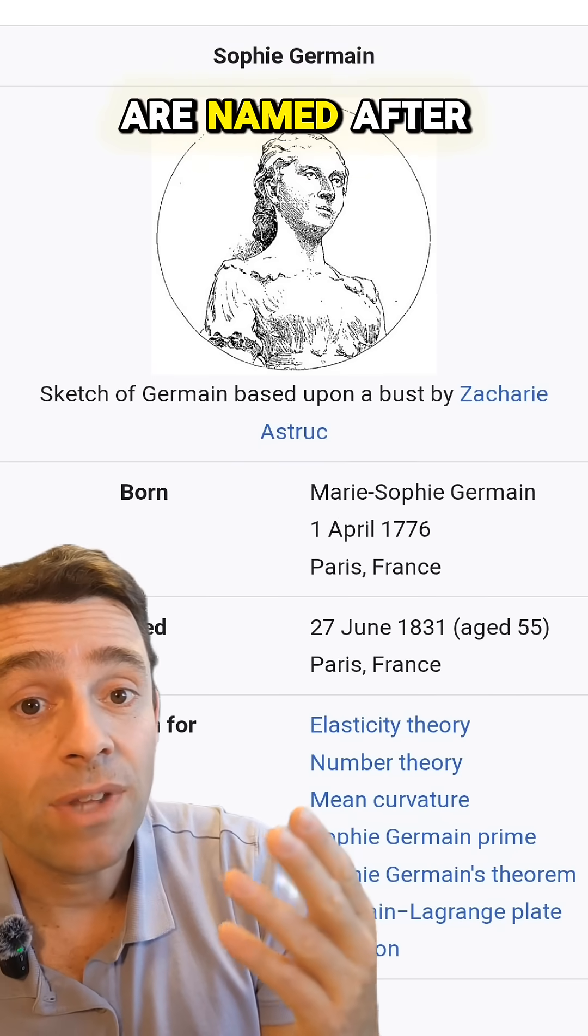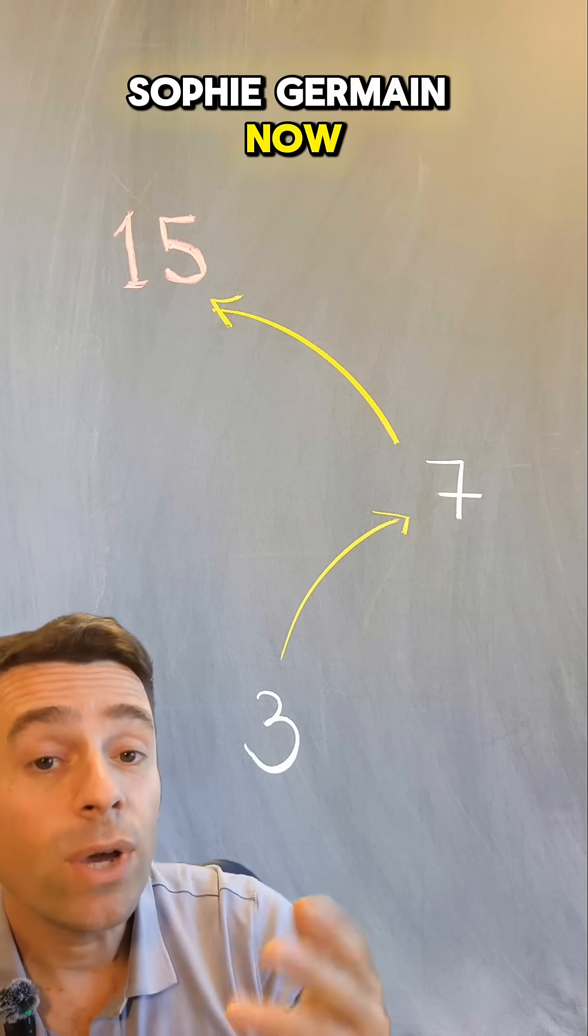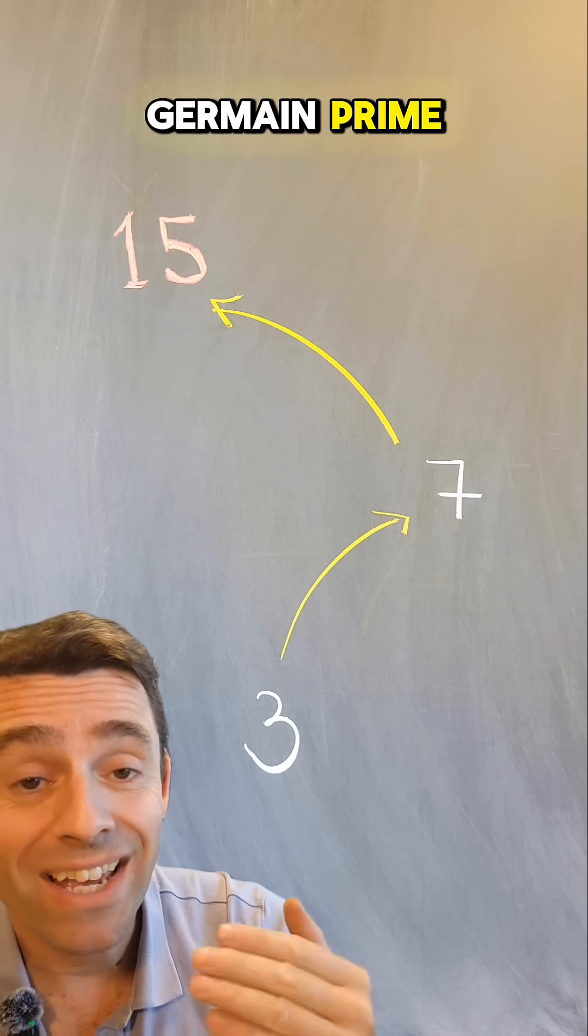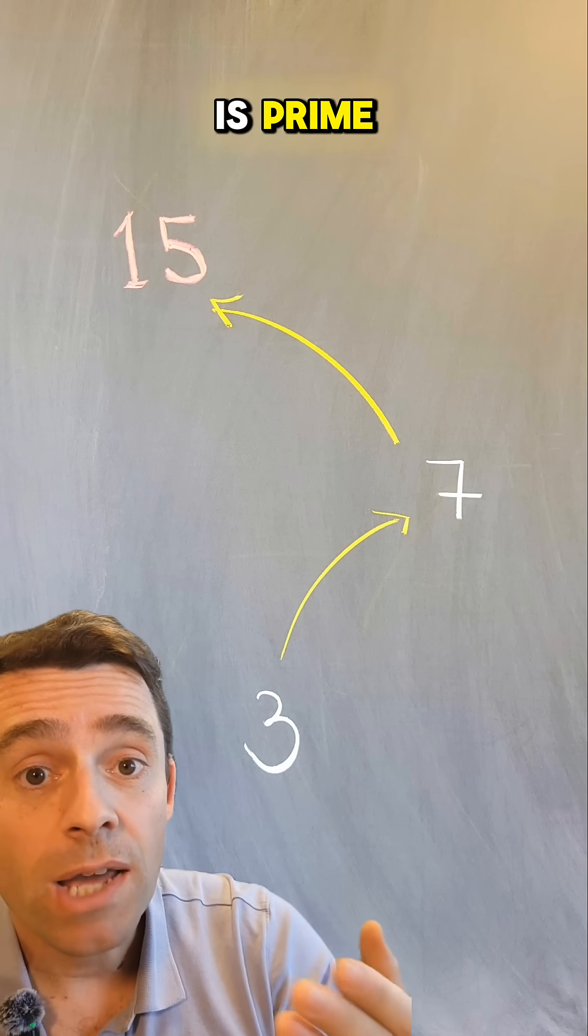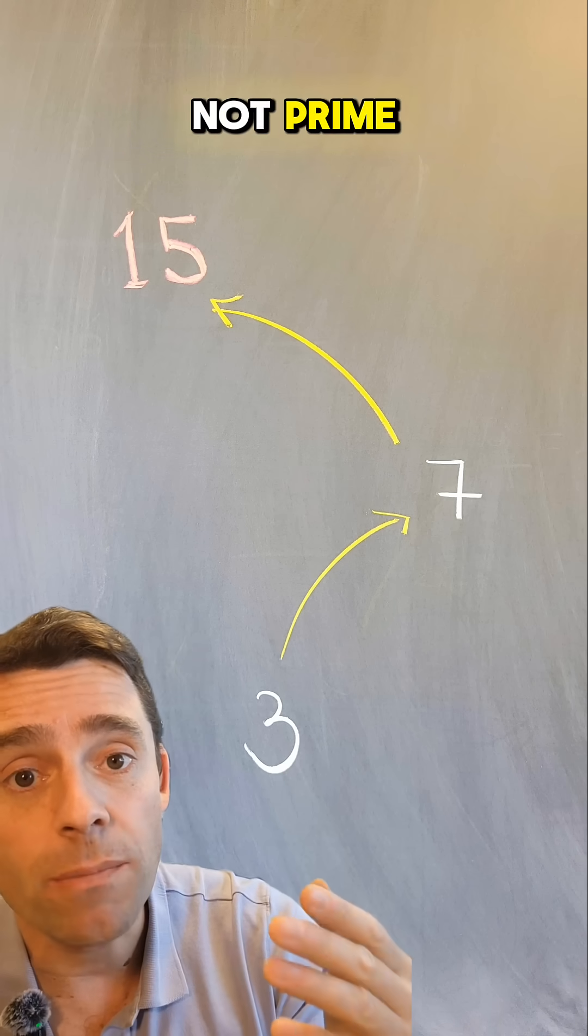The Sophie Germain primes are named after the brilliant number theorist and mathematician Sophie Germain. Now, if you start with a Sophie Germain prime like 3, 7 is prime, so is 7 also a Sophie Germain prime? Well, it's not because 15 is not prime.